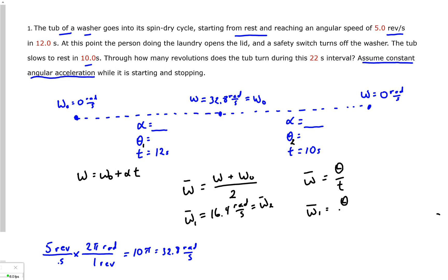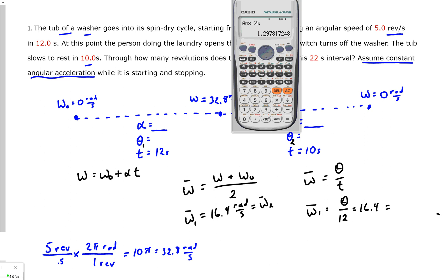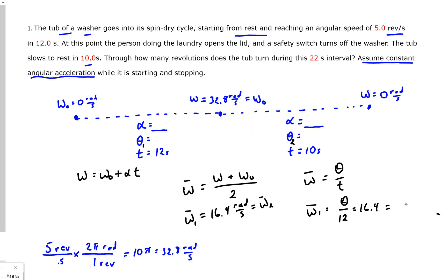So for part one, I know that theta over t, and I actually meant to plug in numbers there. I know that for part one, this would be what? Over 12 seconds, and that is equal to 16.4. So that means my angular acceleration for the first part is 16.4 times 12. So I've got 196.8 radians of displacement for part one.